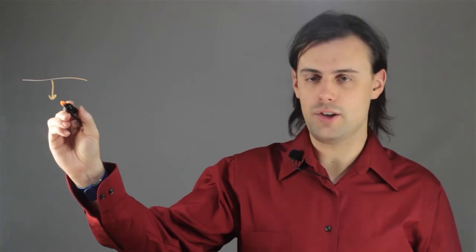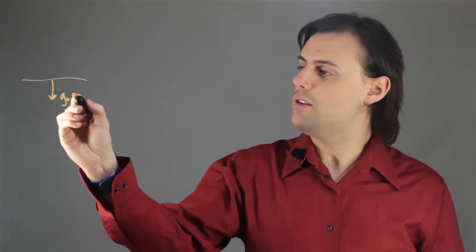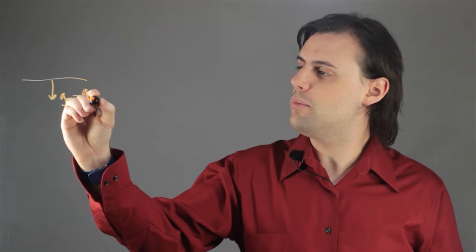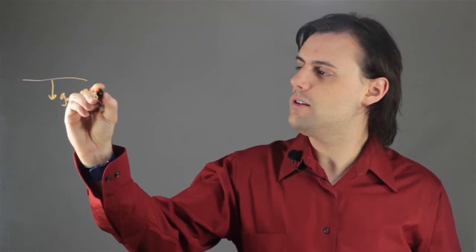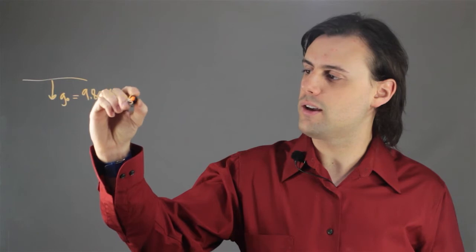Hello, my name is Walter Unglaub, and this is the physics of mass and weight at sea level. At sea level, we have a gravitational acceleration known as g, or g0 sometimes, and this value is approximately equal to 9.80665 meters per second squared.